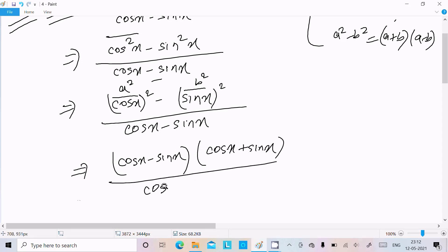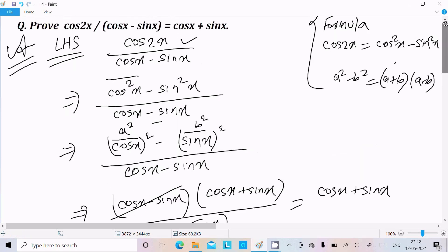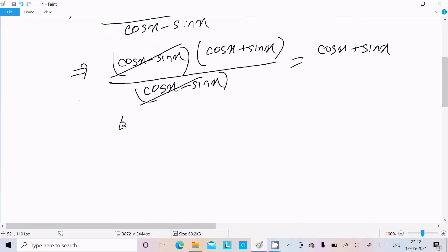So this is the same. Now here you can see cosx plus sinx, it will be left, so here cosx plus sinx. Now we can write LHS equal to RHS, cosx plus sinx.